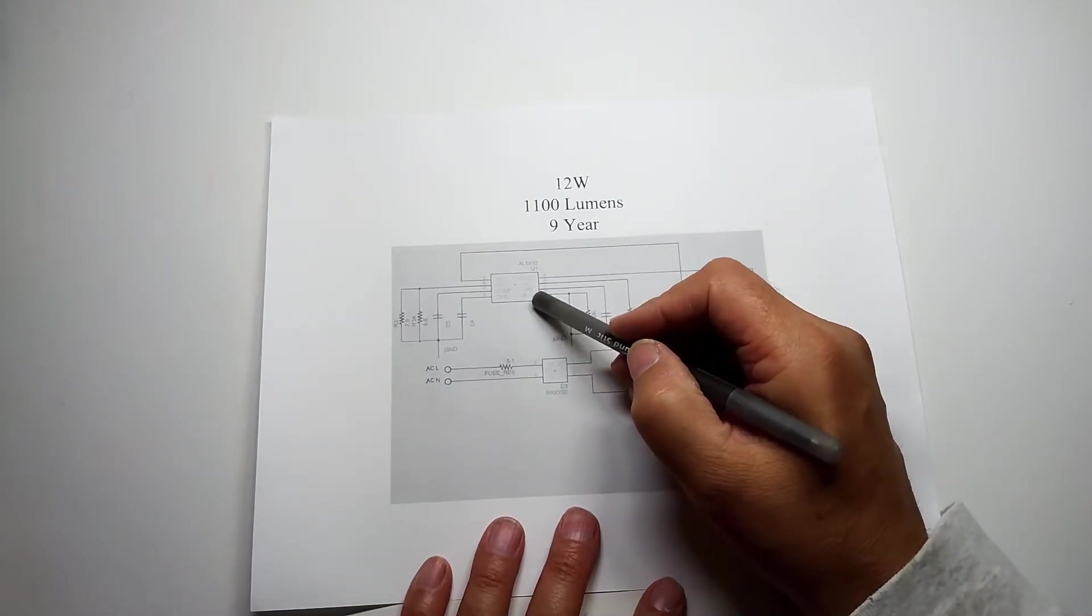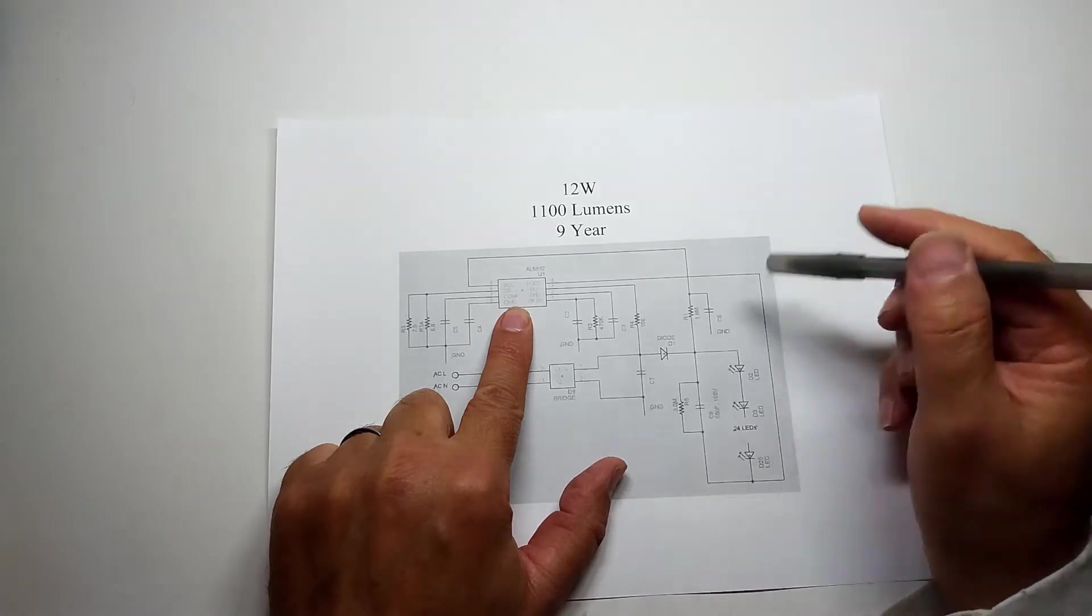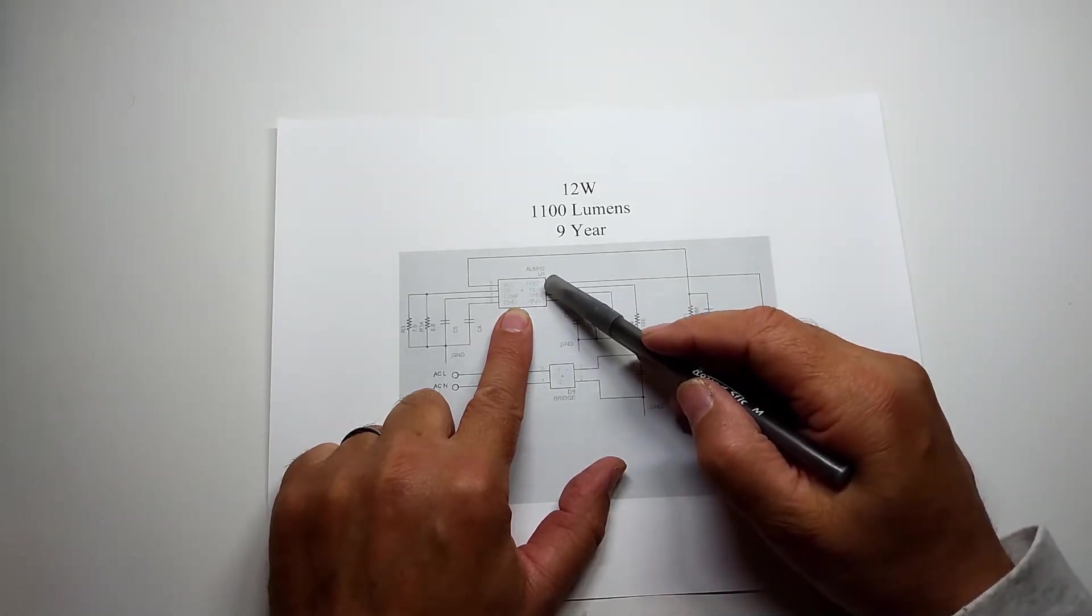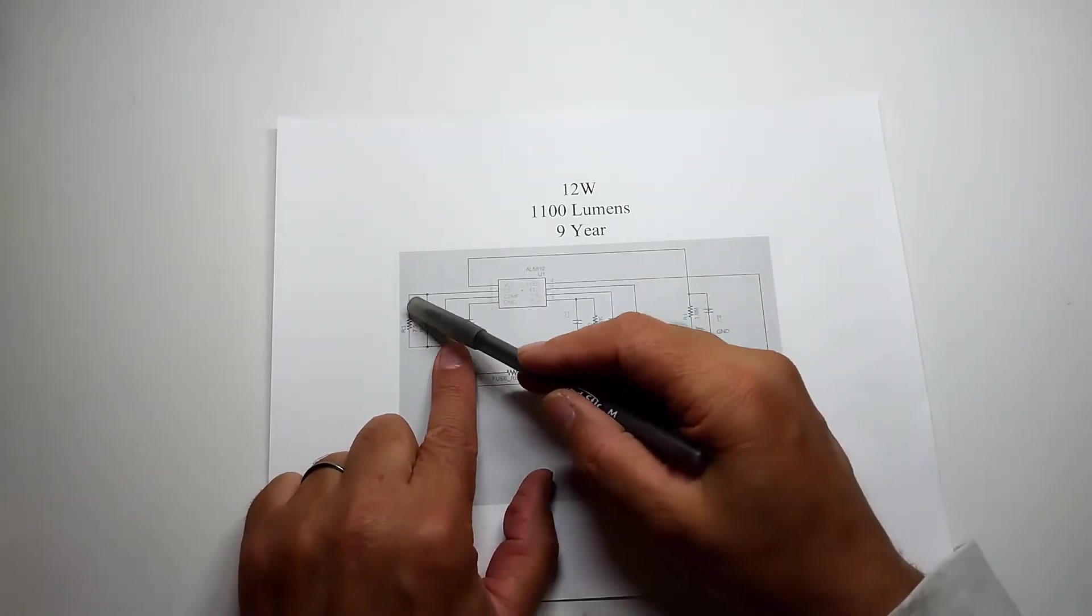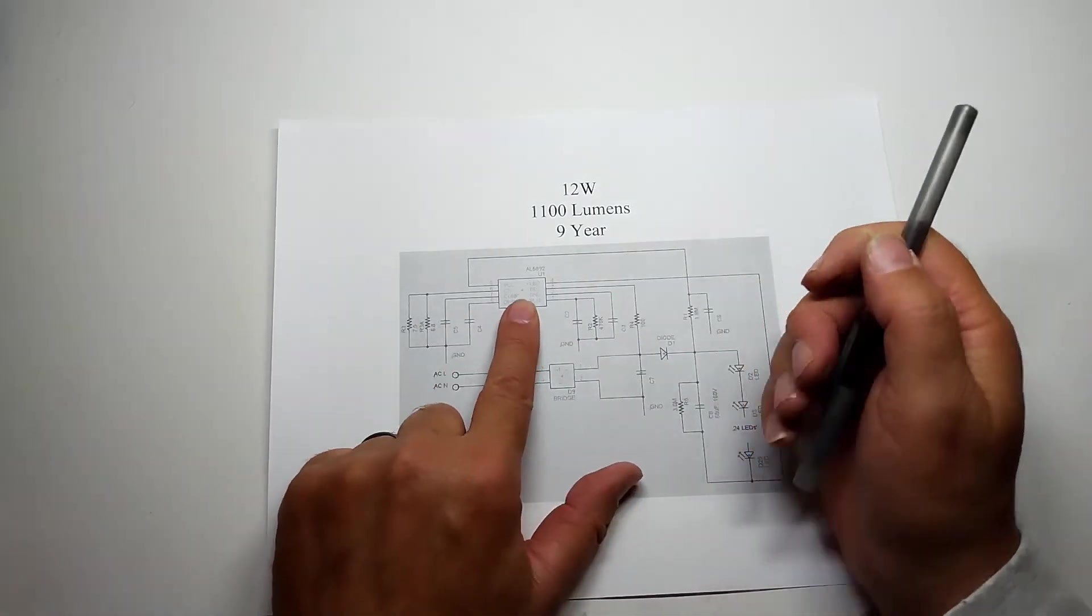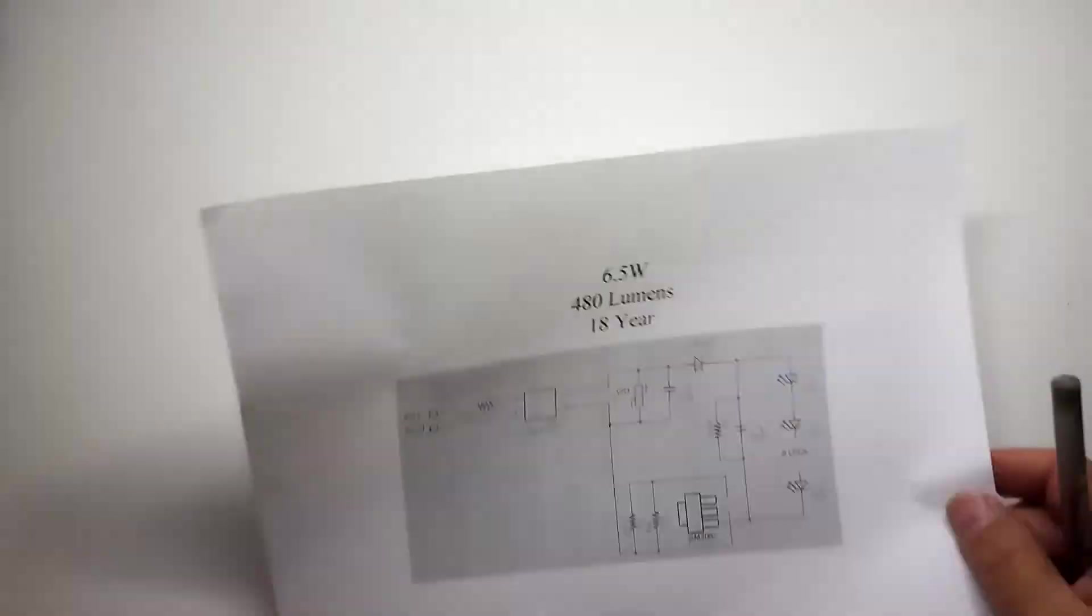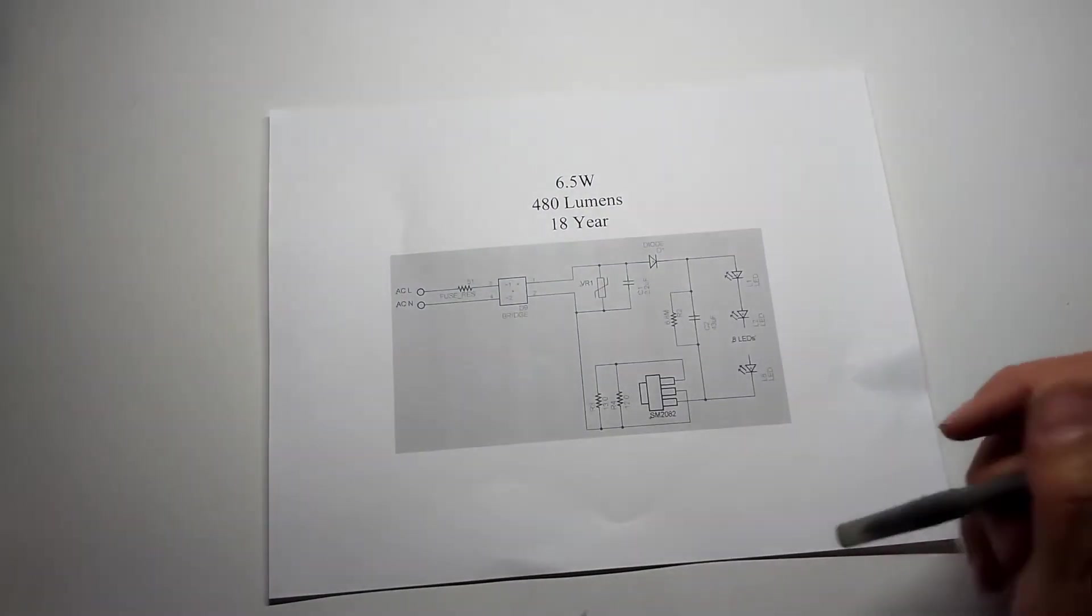I wasn't able to identify exactly, but the one in the 12-watt looked like an AL5892 part. And it's interesting they both have two resistors which sets the current through the LEDs. The six and a half watt, basically the same thing.